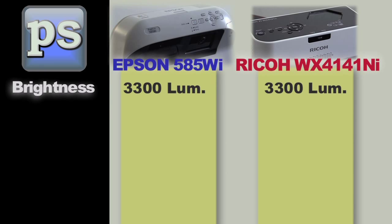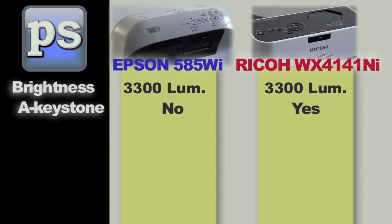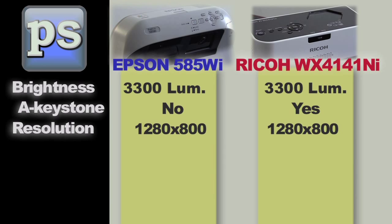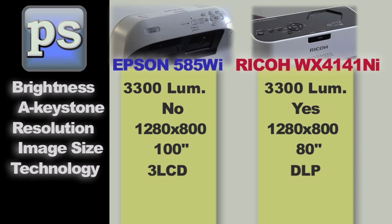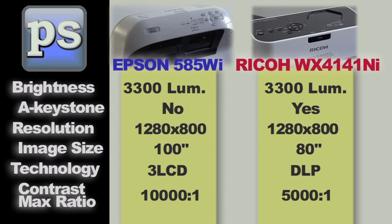Both projectors have a brightness rating of 3300 lumens and a maximum resolution of 1280 by 800. The Epson 585Wi can project an image up to 100 inches and has a rated contrast ratio of 10,000 to 1. The Ricoh WX4141ni can project an image up to 80 inches and has a contrast ratio of 5,000 to 1.